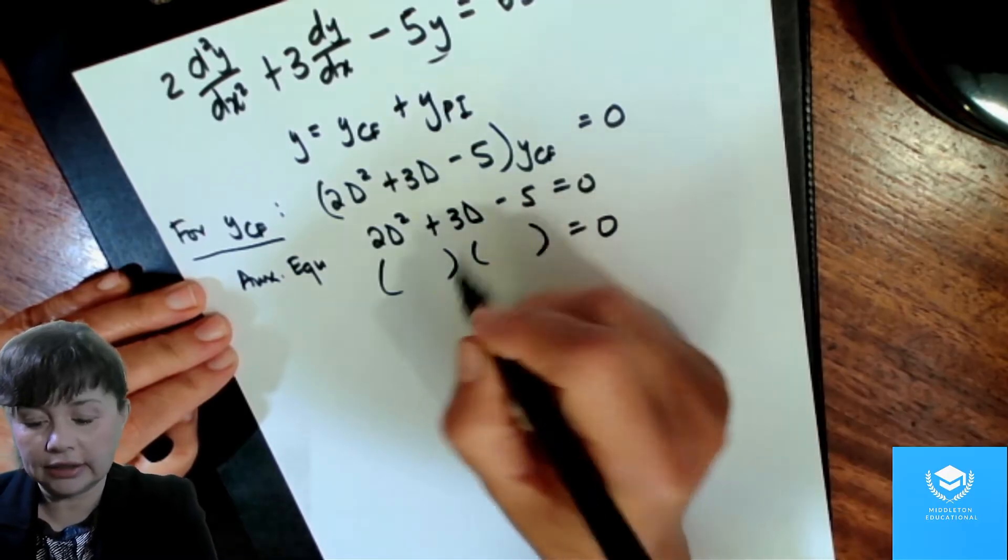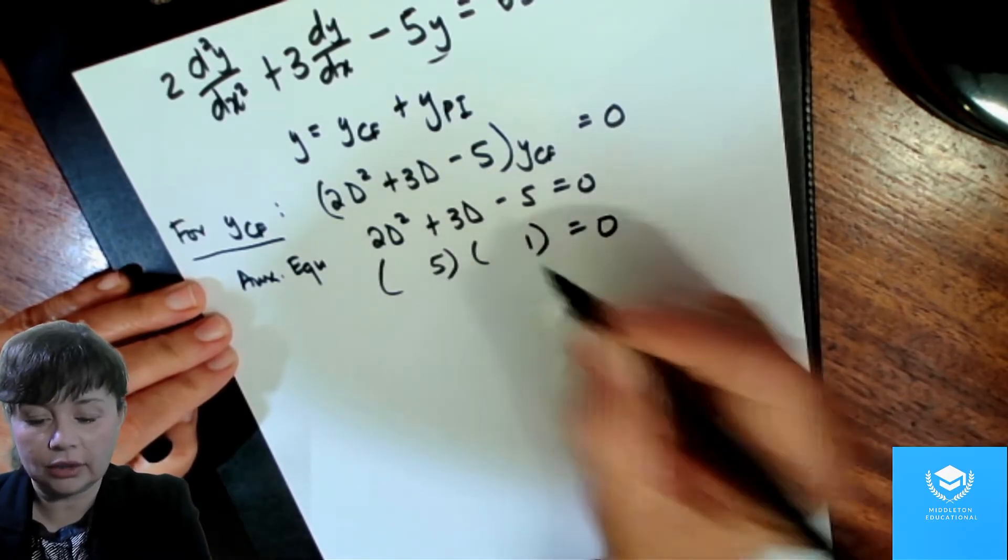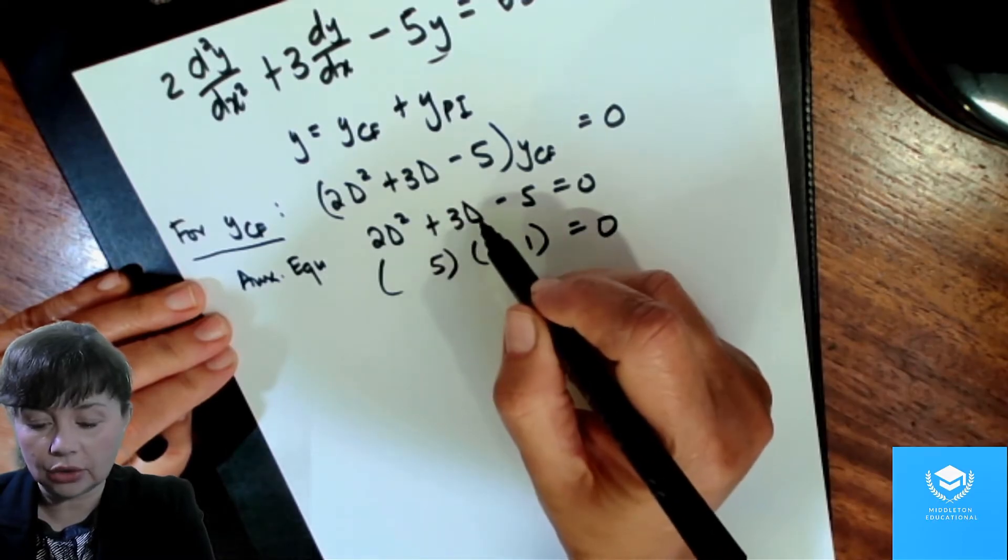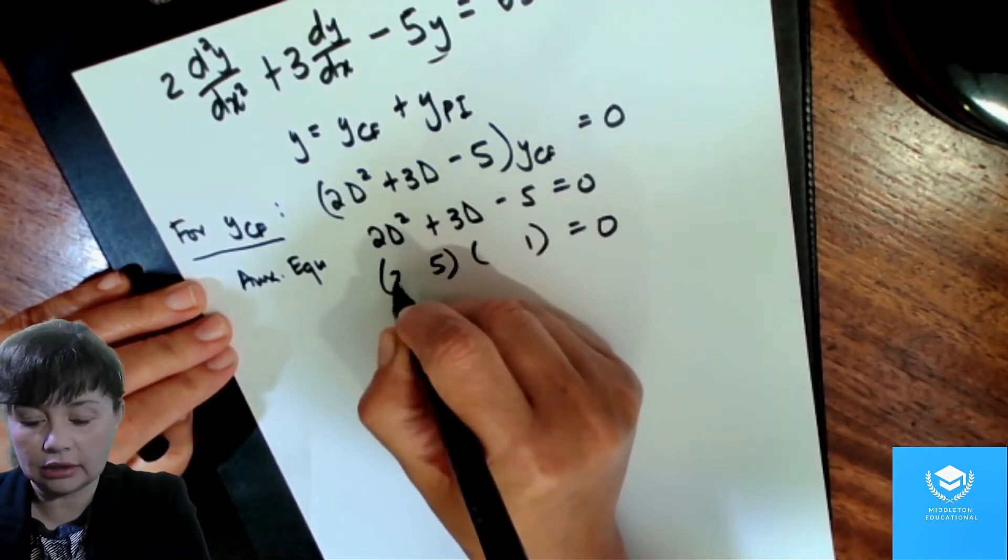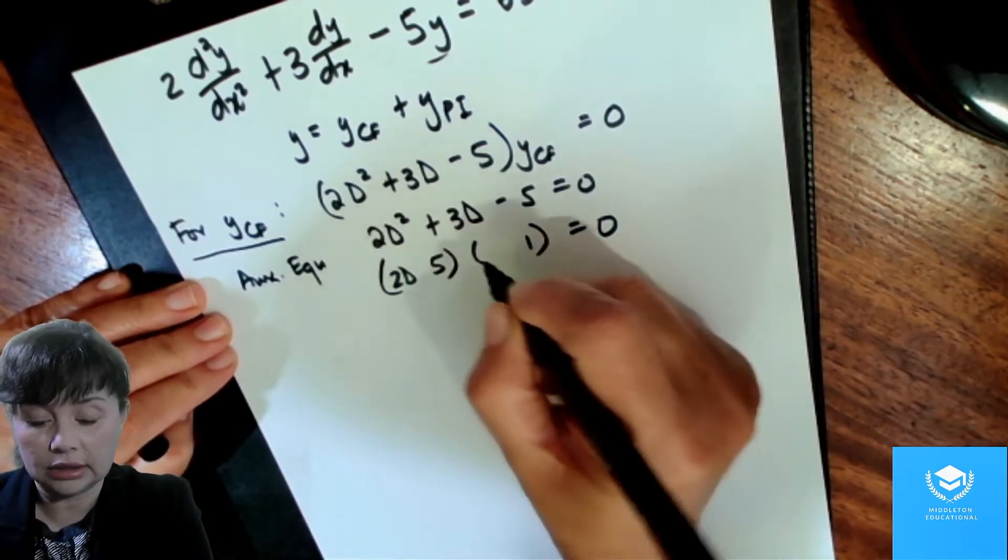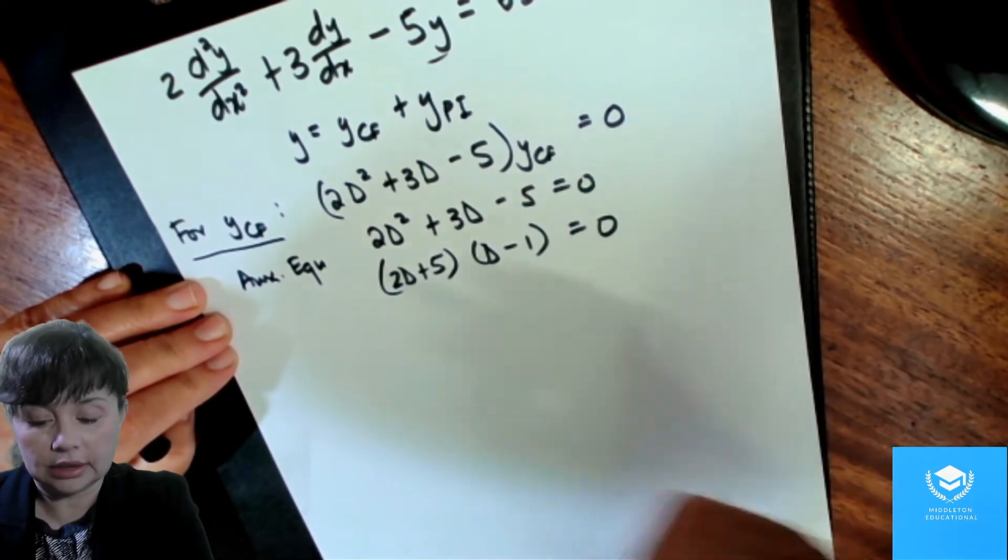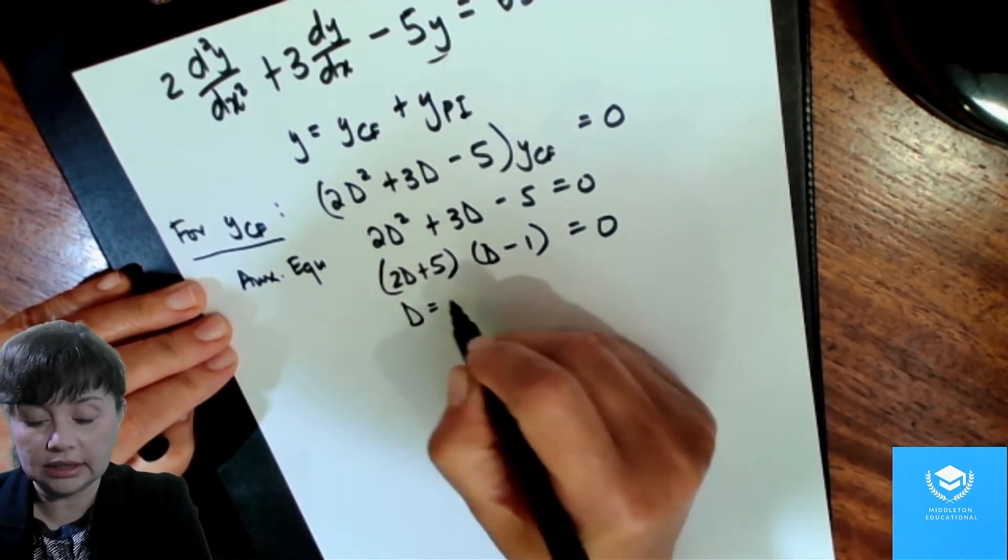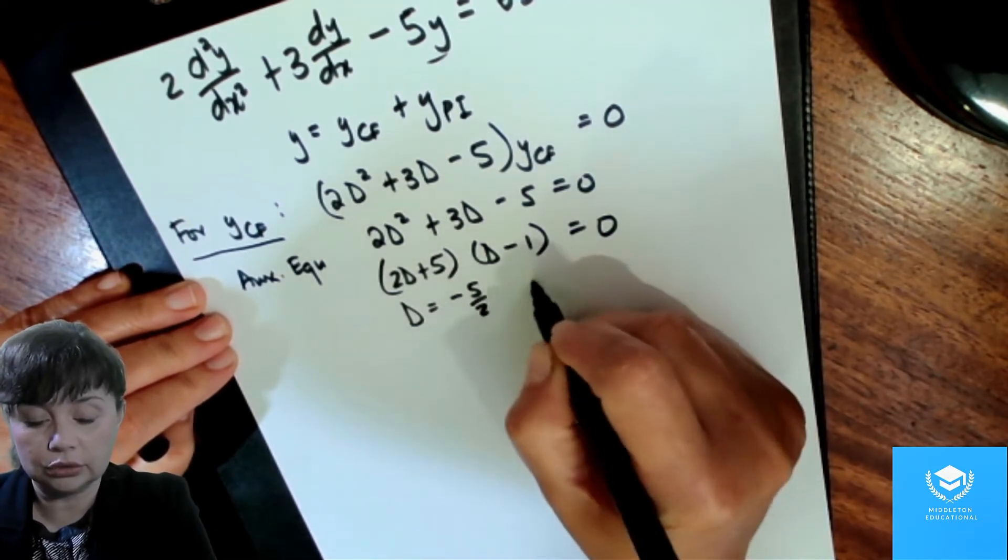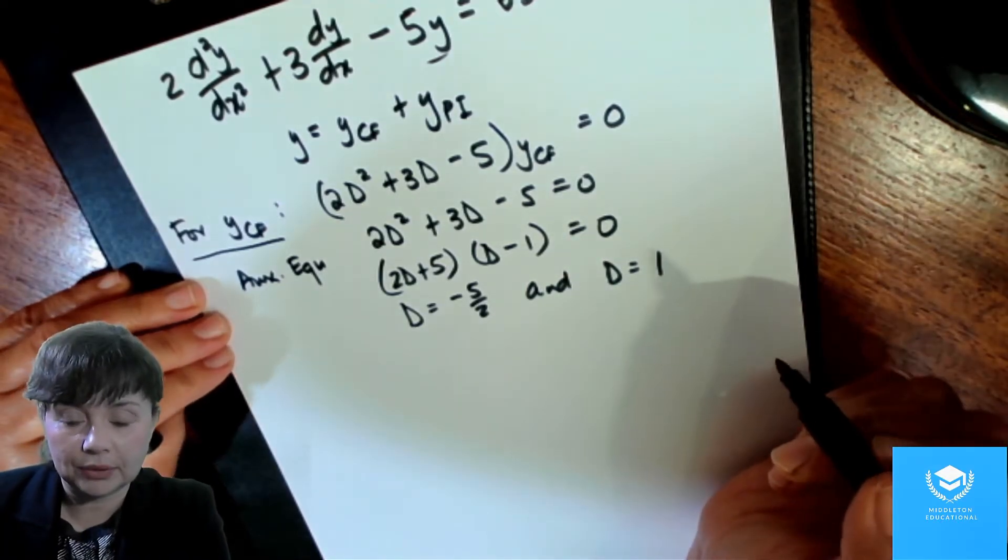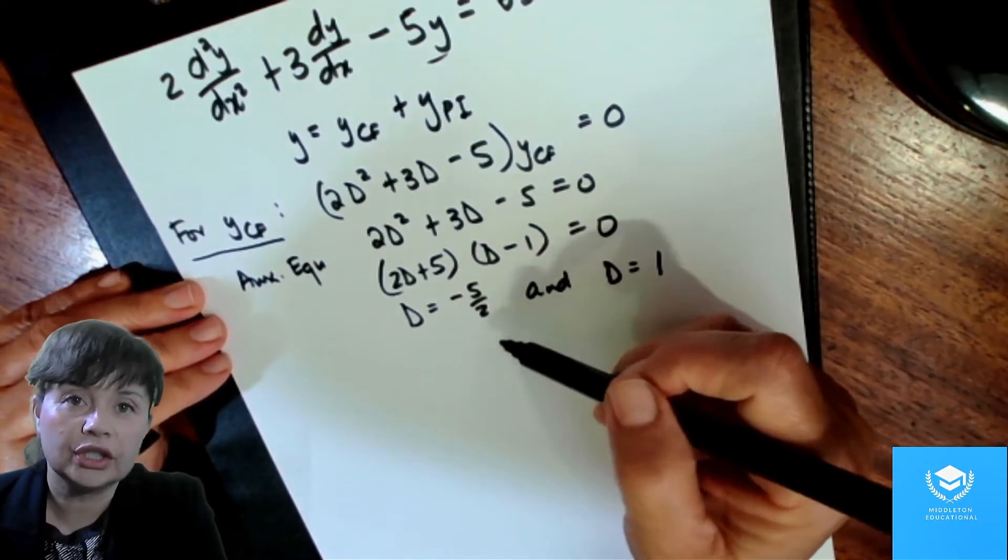I know my factors for 5 are just 5 and 1, and then I know in the middle I must get 3. So I think the 2 has to go there, d, d and we need plus. So it has to be like that,